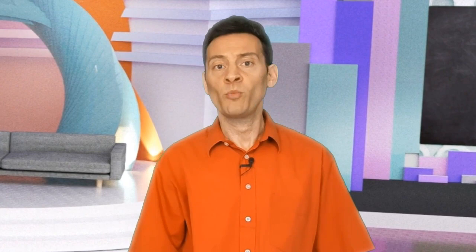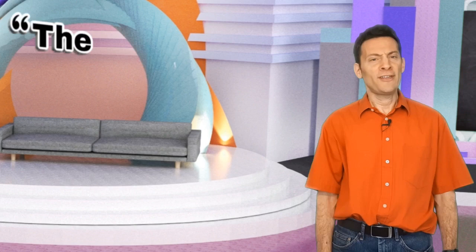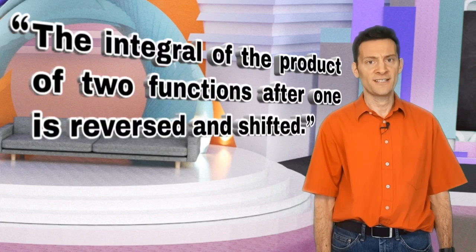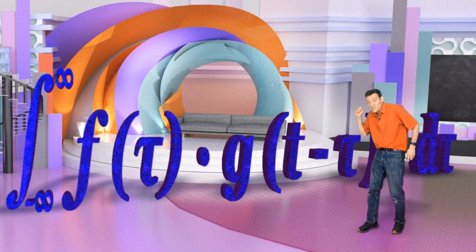When I was at university, my signals and systems lecturer began the course by teaching us about the Fourier transform. He explained that the Fourier transform did what it did by convolving one signal with another. He went on to explain convolution as the integral of the product of two functions after one is reversed and shifted,